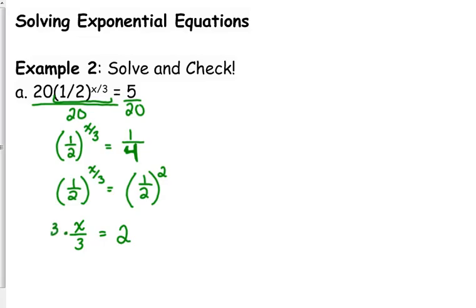And then we can very easily solve and see that x is equal to 6. And we can very quickly check that 6 divided by 3 is 2. 1/2 squared is 1/4. 20 times 1/4 is 5.